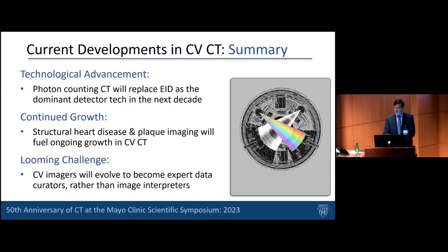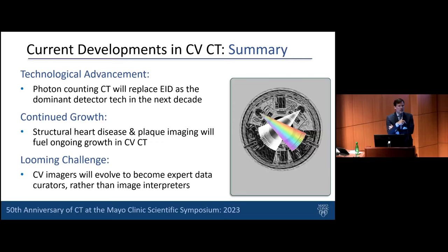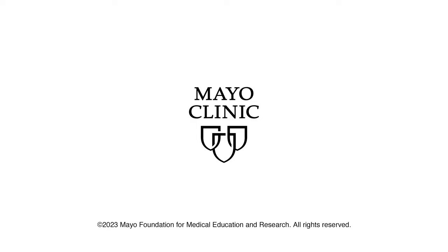Super quick summary and bold predictions: photon counting CT will replace energy-integrating detectors as the dominant detector technology in the next decade — not that bold a prediction. Continued growth in structural heart disease and plaque imaging will fuel ongoing growth in cardiovascular CT. There's never been a better time to be a cardiovascular CT imager. And cardiovascular imagers — I would argue imagers of all types — need to evolve into expert data curators rather than simply looking at pretty pictures and describing what we see. Thank you very much.